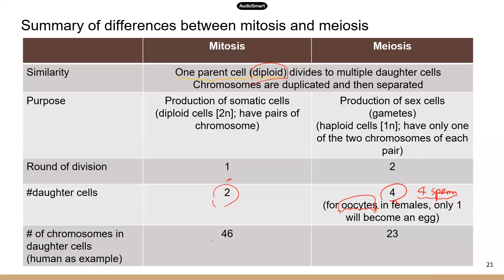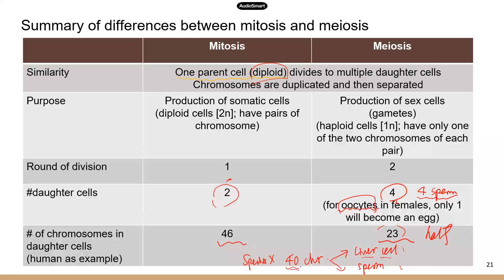The daughter cells from mitosis have the same number of chromosomes as the parent cell, but daughter cells in meiosis have only half. For example, if an organism has 40 chromosomes, how many chromosomes would you expect in its liver cell and in its sperm? The liver cell is a somatic cell produced by mitosis, so it has 40. The sperm cell only has half the species' unique number, so it's 20.